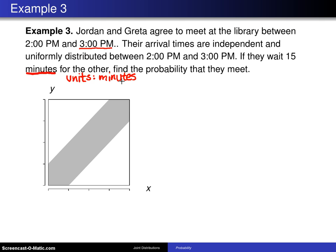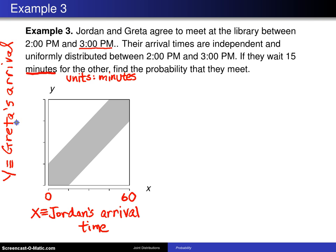Once you decide you're going to go with minutes, we're going to let the random variable x be Jordan's arrival time measured in minutes after 2 o'clock. So that means we go from 0 to 60. Also, you have the random variable y, and this will be Greta's arrival time in minutes after 2 o'clock. So it can also go from 0 to 60.